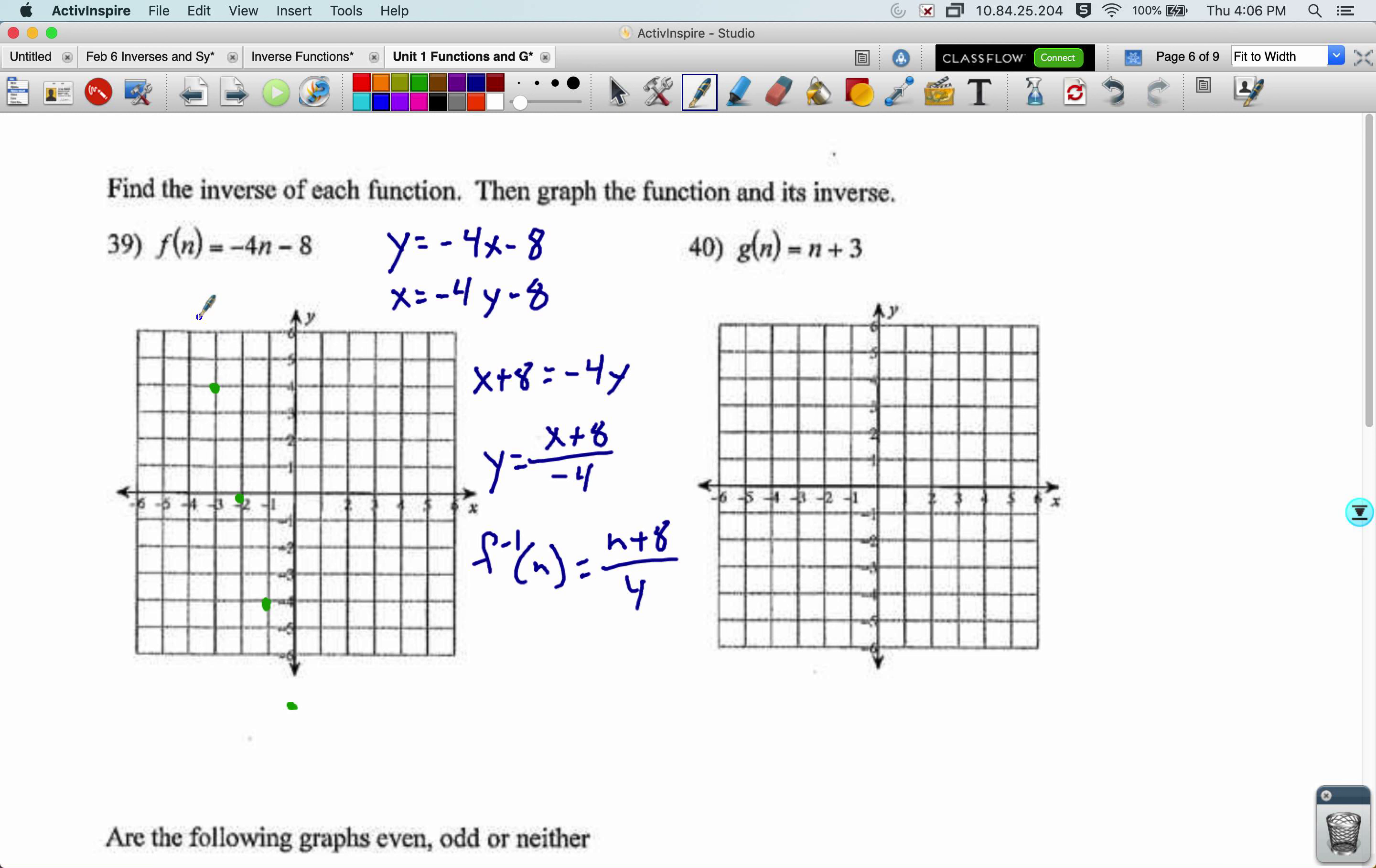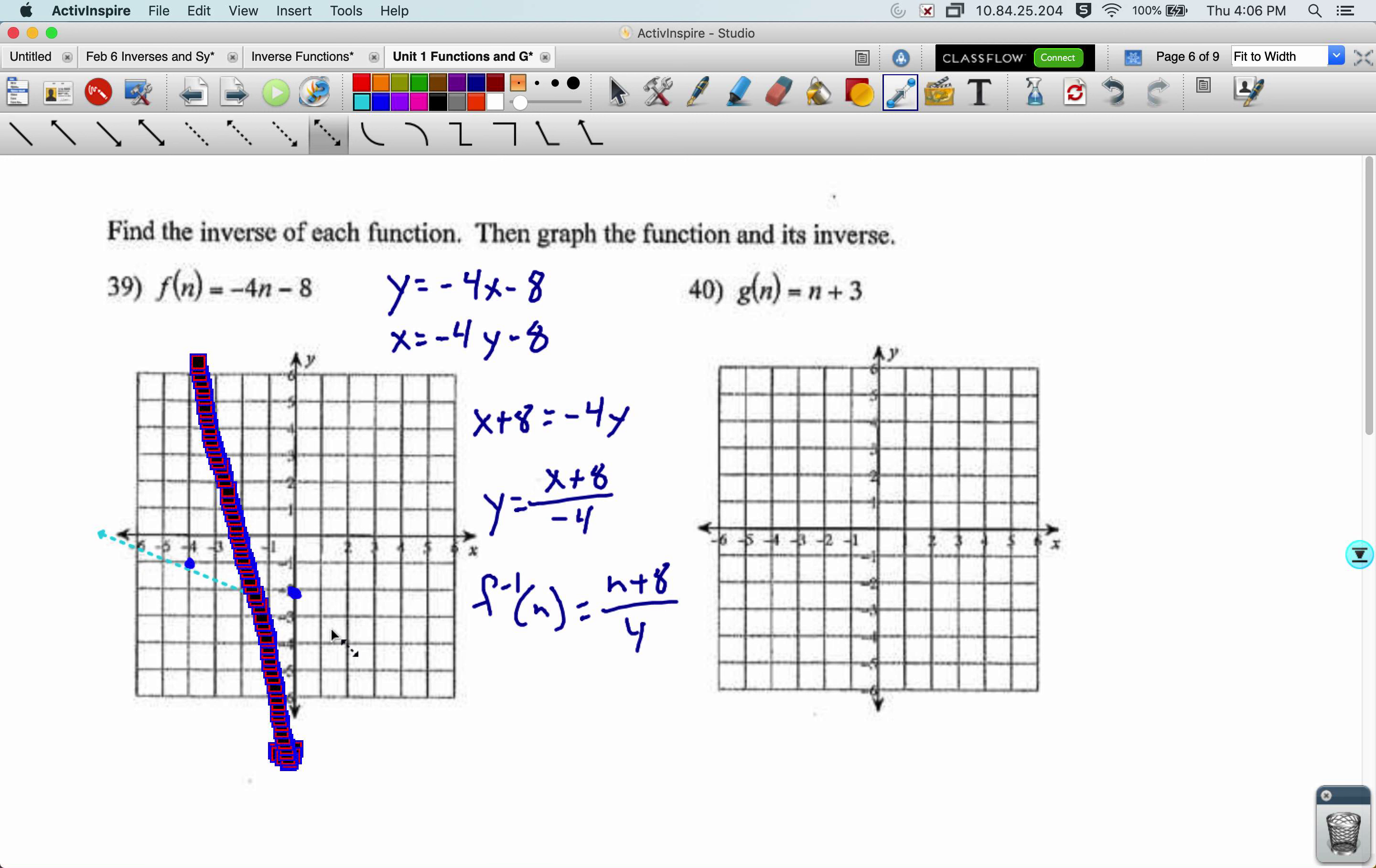So there's my original line. Now this looks hard to graph, but because I know these are inverses, I can just invert every point and be done with it. So negative 2 comma 0 becomes 0 comma negative 2. Negative 1 comma negative 4 becomes negative 4 comma negative 1. And so on, but 2 points make a line. There's the line of my inverse. And these should look symmetrical over the line y equals x. Which is this line right here. And they do look like they are symmetrical over that.